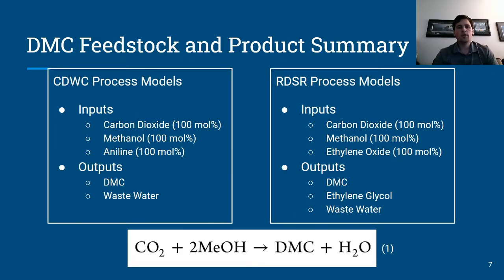Before we dive into the CDWC and RDSR processes, we'll first begin with an overview of the inputs and outputs. Being that both are direct synthesis processes of DMC from carbon dioxide and methanol, they both utilize the same CO2 and methanol inputs, along with outputs of DMC and water as a waste. Within the CDWC process, aniline is used as an entrainer to improve separation between methanol and DMC via extractive distillation. Within the RDSR process, ethylene oxide reacts with water to reduce the amount of water in the reactor recycle streams and improve DMC equilibrium. In this hydration reaction, ethylene oxide and water react to produce ethylene glycol, which is an additional valuable byproduct.